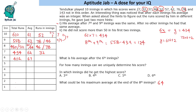Given that he did not score more than 50 in the first two innings, there are only two numbers left below 50: 27 and 37. So in the first two innings his scores are 27 and 37 in some order. After the second innings his total is 64 and his average is 32.